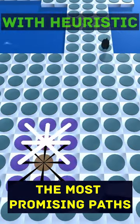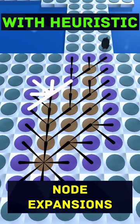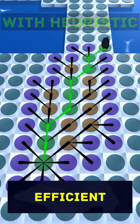This helps ASTAR to prioritize the most promising paths, reducing unnecessary node expansions and making it incredibly efficient.